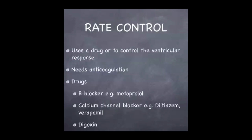In rate control, we use a drug to control the ventricular response to the chaotic atrial electrical activity. When we do this, we need to give the patient anticoagulation to prevent the formation of thrombi, particularly in the left atrium. The three classes of drugs to be aware of are beta blockers — the most commonly used being metoprolol — calcium channel blockers, that's diltiazem and verapamil, and digoxin.